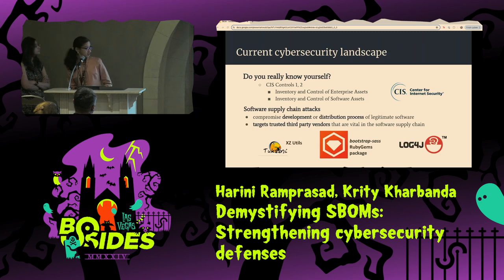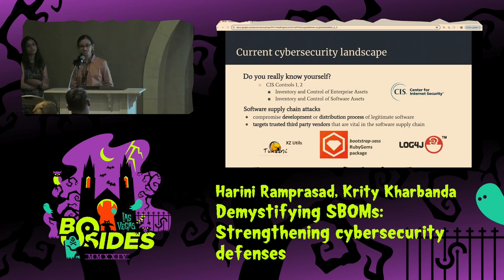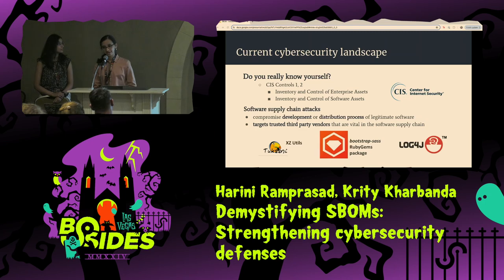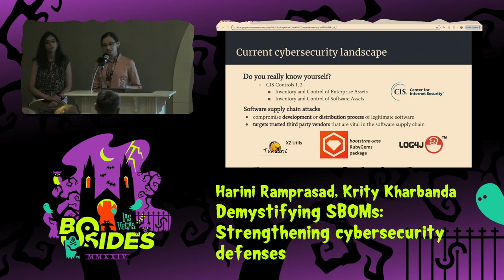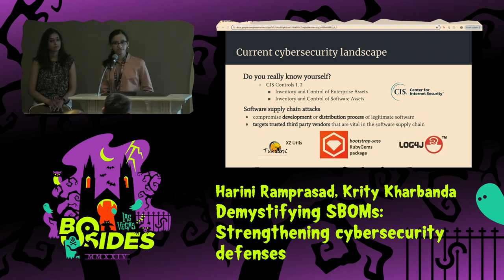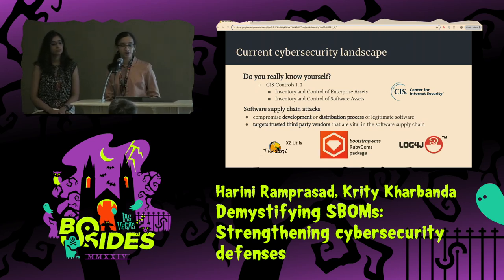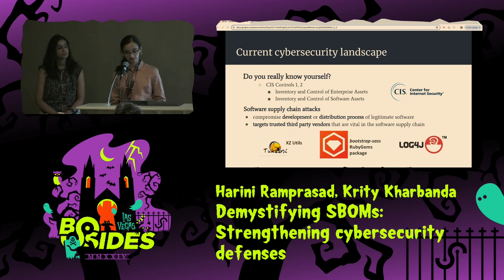The other example is the XZ library. Had it not been for a curious developer who was looking to debug a performance issue, a very stealthily written malicious code would have been shipped to so many Linux systems, essentially enabling attackers to have a backdoor on those systems. We can see how devastating that could have turned out. All this is to say that it has become incredibly important to record and track information about what our systems and software is made up of.